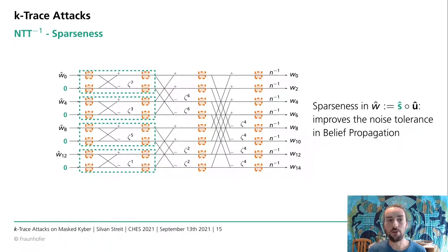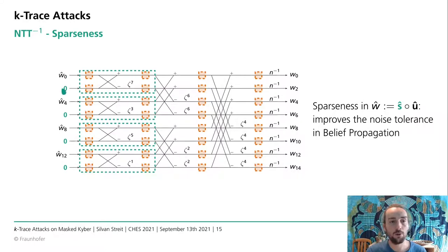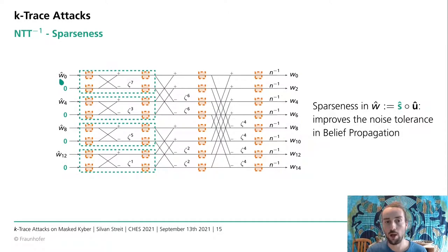First, sparseness. Our belief propagation of the inverse NTT improves drastically by employing sparseness. Sparseness means, for example, setting every second coefficient to zero. This allows, within certain blocks, all the leakage values to depend only on a single signal value. So those three leakage points all depend on W-zero and no other unknown value, allowing us to combine them straightforwardly through belief propagation throughout the rest of the NTT.